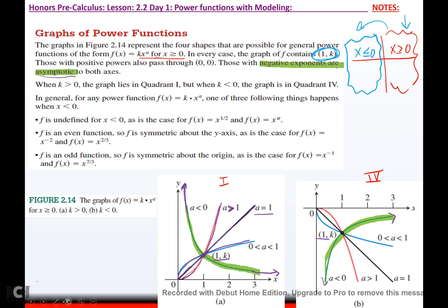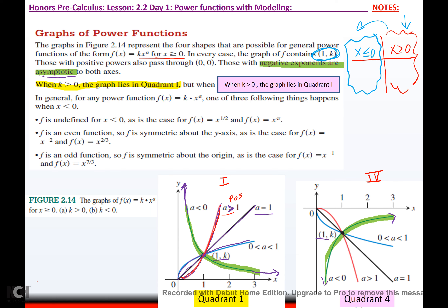Negative exponents will be asymptotic to both axes. If k is positive, you're in quadrant 1; if k is negative, you're in quadrant 4. If the power is positive and greater than 1, the graph curves up. If a equals exactly 1, it's linear. If a is between 0 and 1 — like a fraction — it curves the other way. Same applies in quadrant 4, just reflected downward.